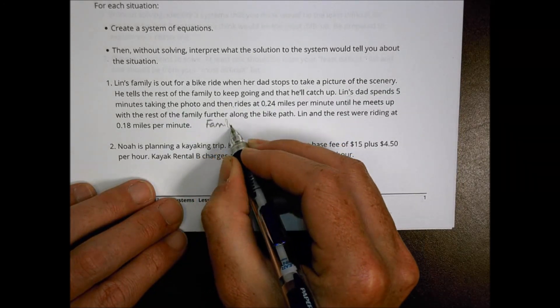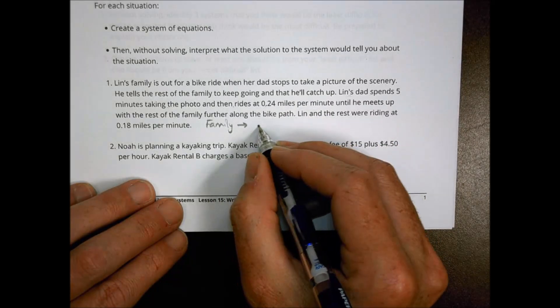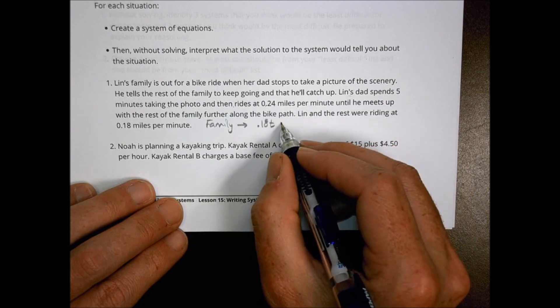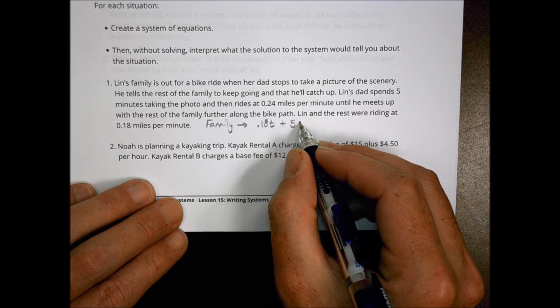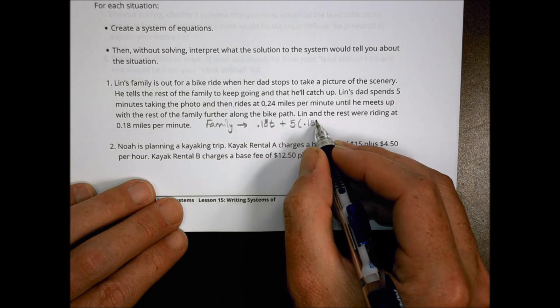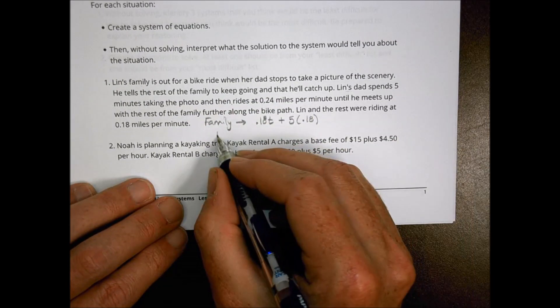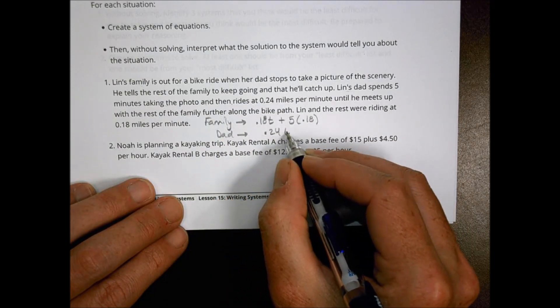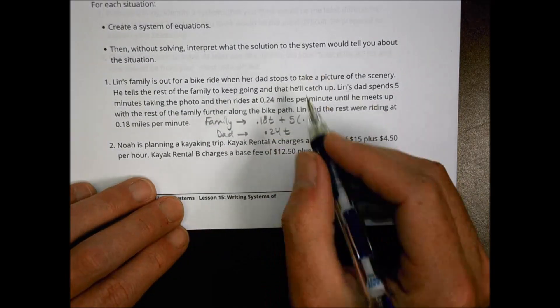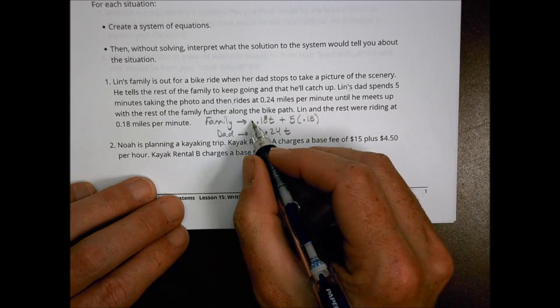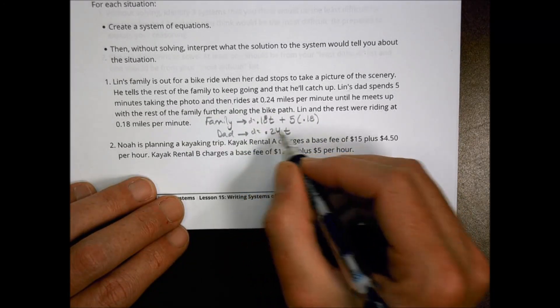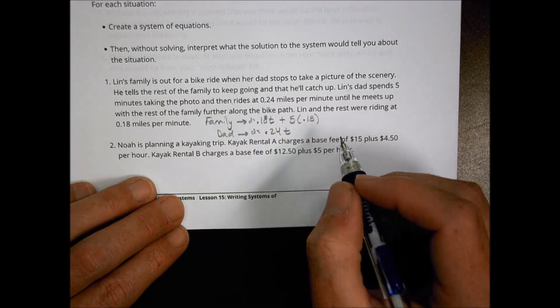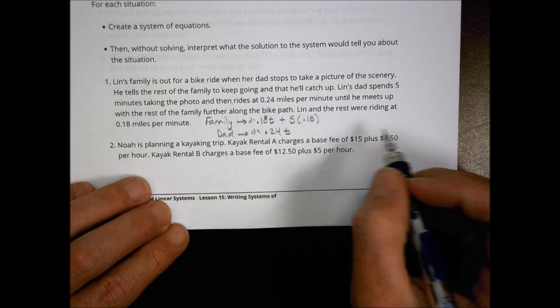Lynn and the rest were riding at 0.18 miles per minute. So in terms of the family, we could say the family seems to be going at a rate of 0.18 miles per minute. But they're also starting, in this case here, they've already gone for 5 minutes at that same rate. Now dad is traveling along at 0.24. So in theory, if we set these two things equal to each other, the distance here and the distance there, that would tell us where they'd meet together. The solution would be the time that it takes dad to catch up with the family.